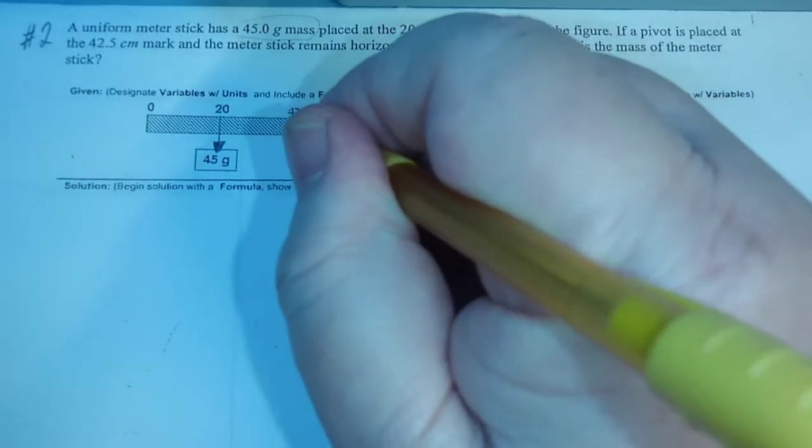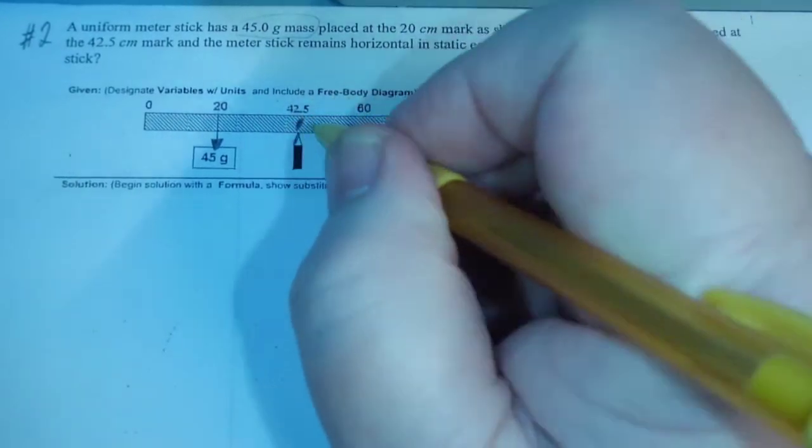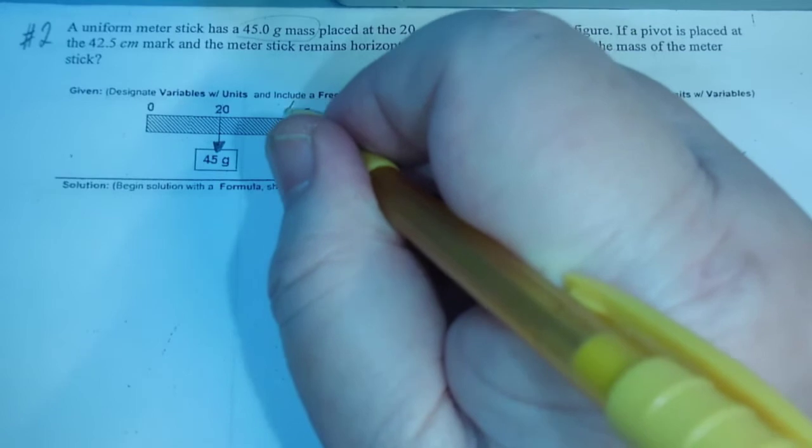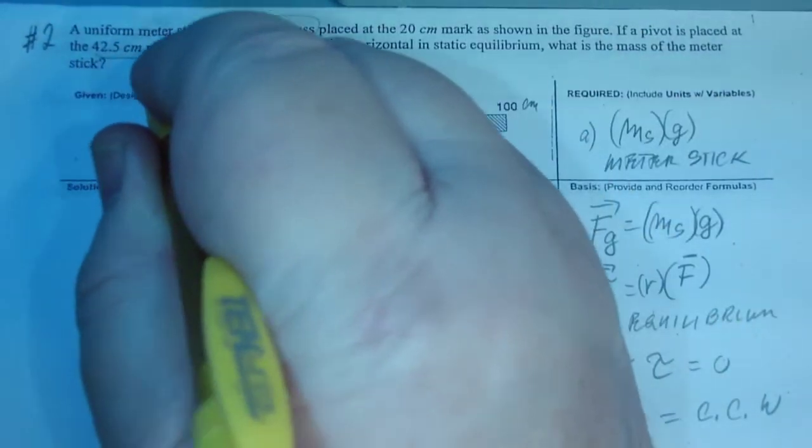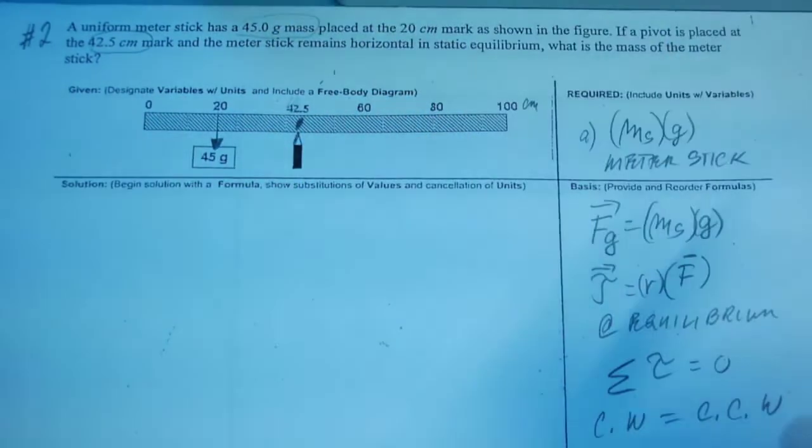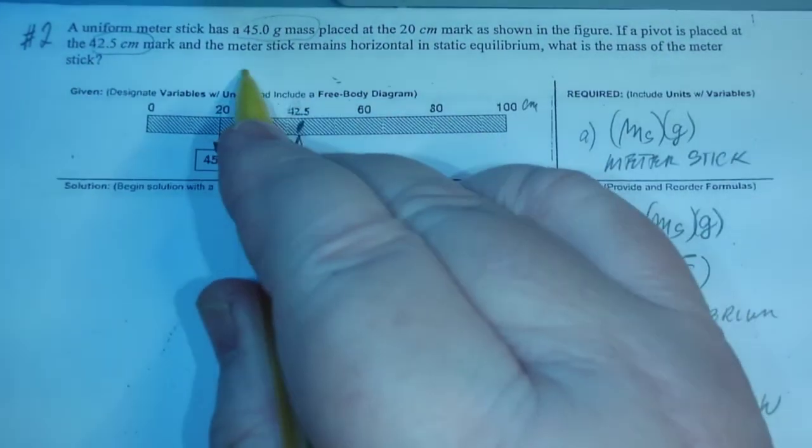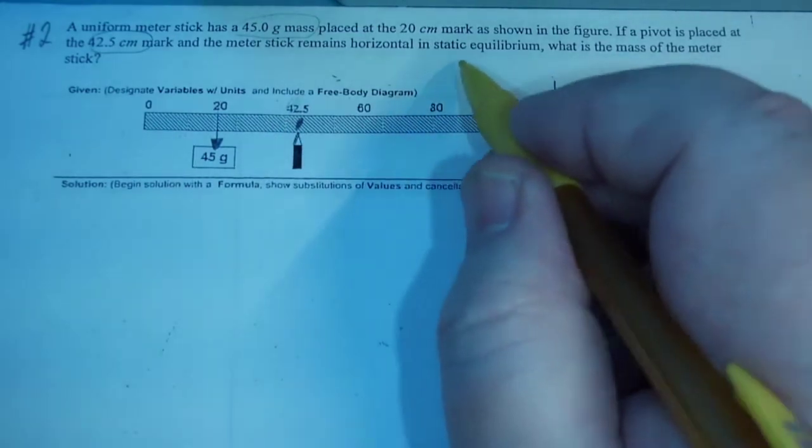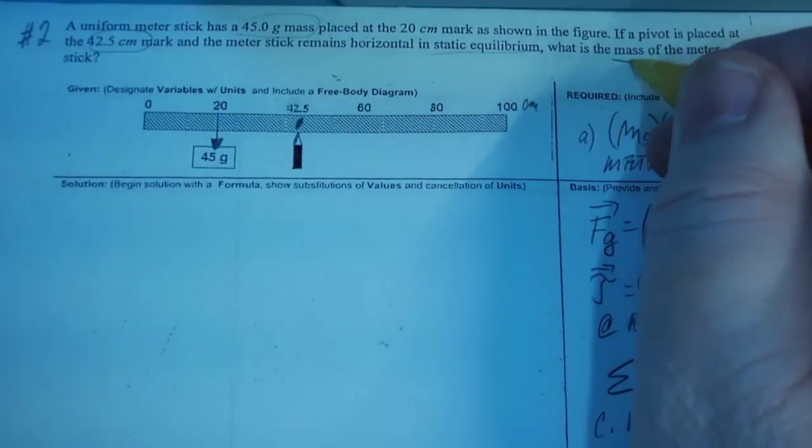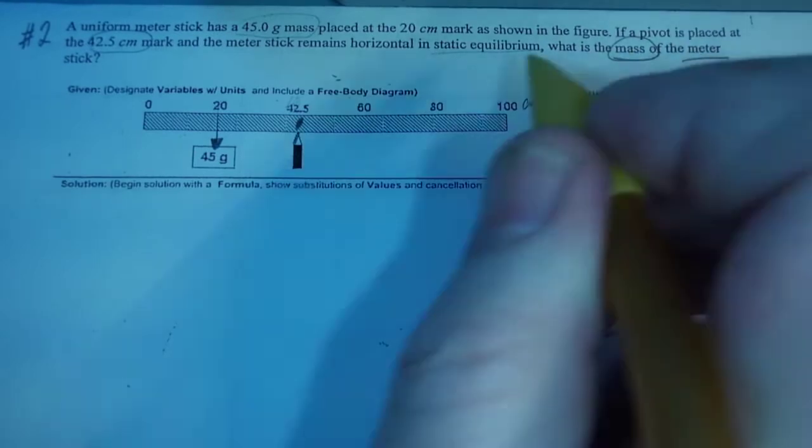The pivot, or fulcrum, right, is at 42.5 centimeters. I don't know if it's clear or not. Okay, and what are we looking for? It's going to be in static equilibrium, but we're looking for the mass of the meter stick.